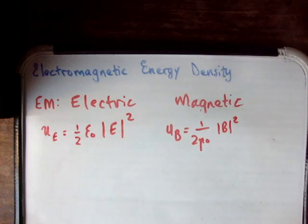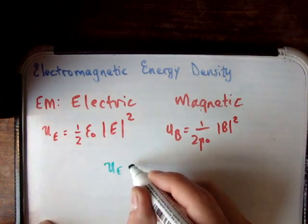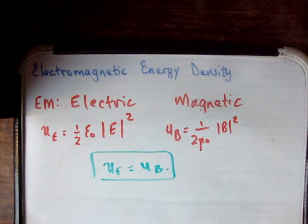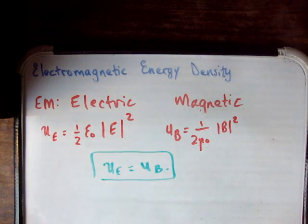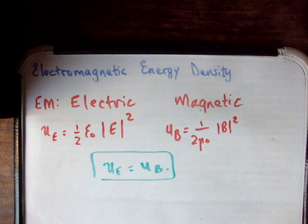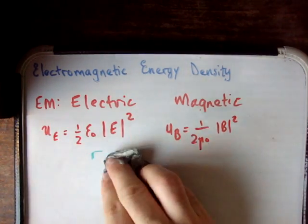I'm going to tell you that u_e equals u_b — that's a fact. And it should make sense, because a changing electric field makes a changing magnetic field, so they're always becoming one and the other. If you had x amount of energy in your electric field, after it becomes a magnetic field and back into an electric field, you'd have to have the same amount of energy. So it makes sense that the electric and magnetic fields have the same energy densities.